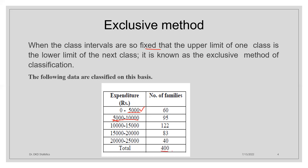There are 400 family members and the average expenditure of the family members is given. We can understand from this table: 0 to 5000 rupees per month expenditure — 60 families have expenditures between 0 to 5000. And 5000 to 10,000 — 95 families; 10,000 to 15,000 — 122 families; 83 families have expenditure of 15,000 to 20,000; and 20,000 to 25,000 is 40 families. This is the meaning of the exclusive class interval.